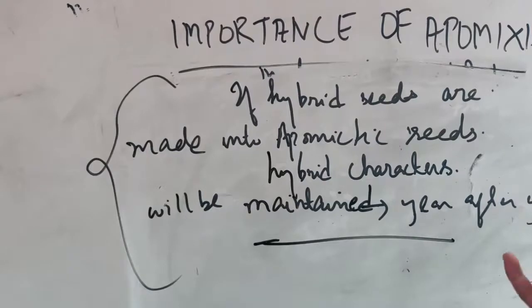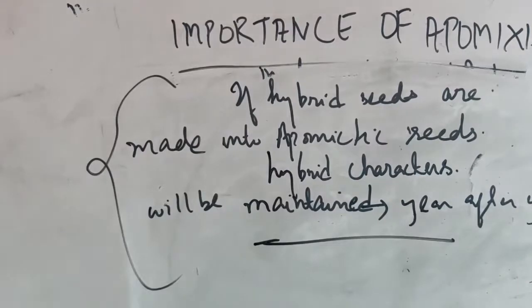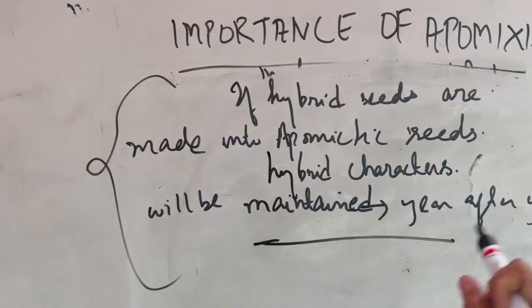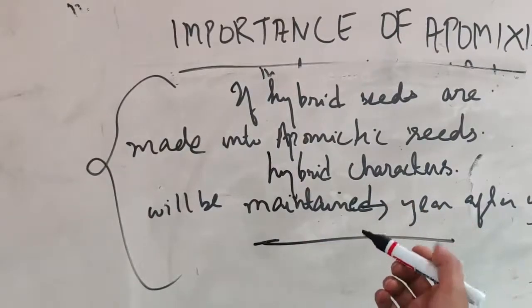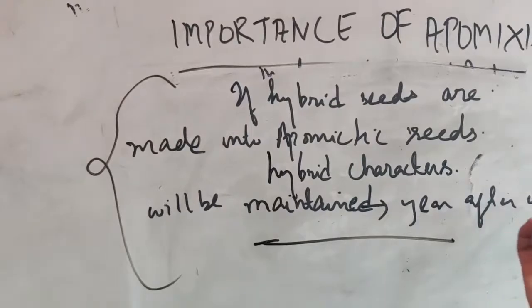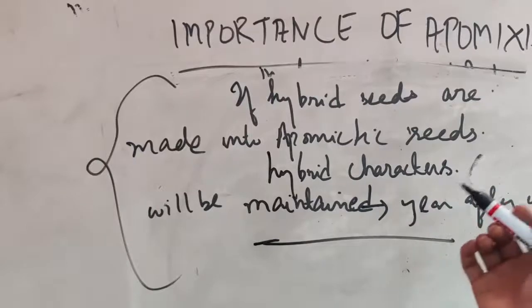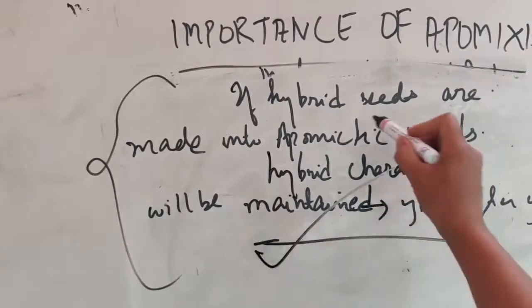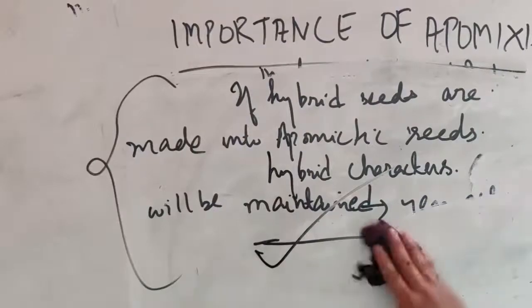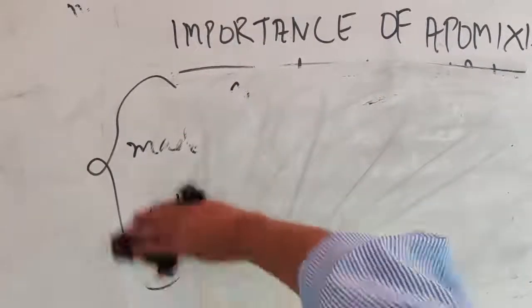When hybrid seeds are sown in the soil, the offspring characters segregate — the hybrid characters from the mother and father plant are not maintained. But if we make them into apomictic seeds, there will be no segregation of characters because there is no fertilization. Seeds are formed without fertilization, so they can be used again and again, year after year, generation after generation, saving money for farmers. The research is still ongoing, and if we can achieve this, it will be very beneficial for farmers.